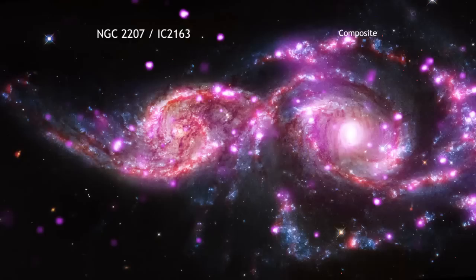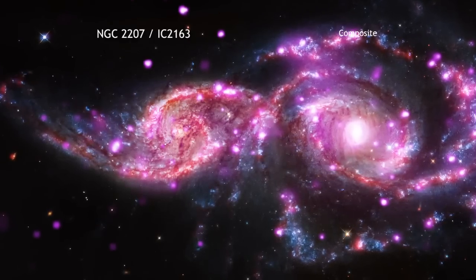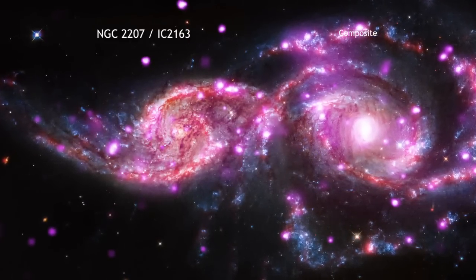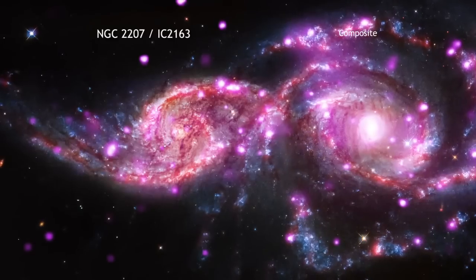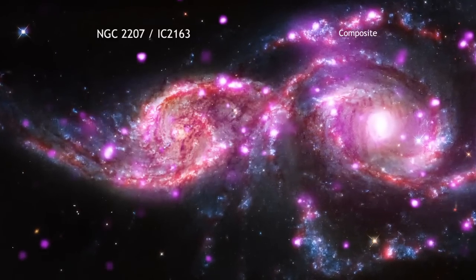Located about 130 million light-years from Earth in the constellation of Canis Major in the southern hemisphere, this pair of spiral galaxies is caught in a grazing encounter.